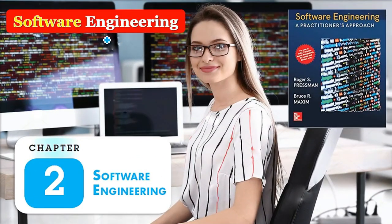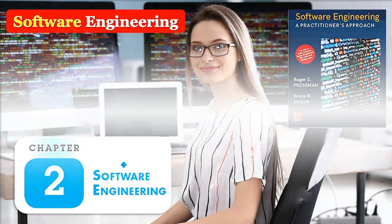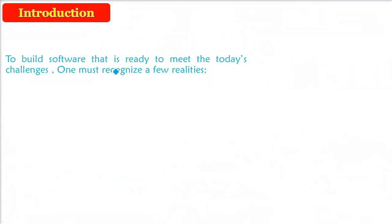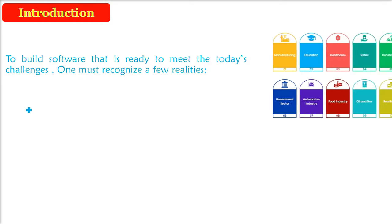In software engineering, we are taking chapter number two, which is software engineering. The first thing is today the software making, building, employing, and usage has changed. In order to build software that is meeting today's challenges, we need to know certain realities.